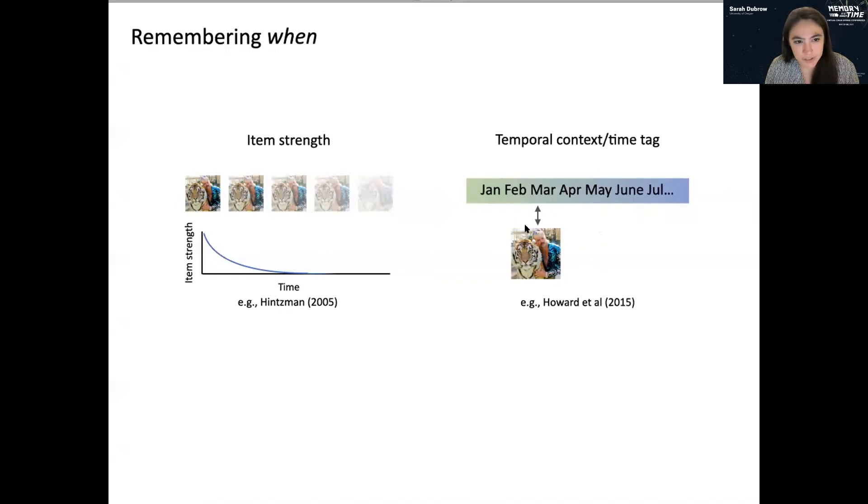And so that might be related to temporal context representation or a time tag or something like that, but the event becomes associated with a particular location in time and that gives you relatively more precise information about when that event occurred. So, you know, for the example of Tiger King, you might remember that it came out in March, or you might remember sort of a more general temporal context, like there was a coincident global catastrophe happening at the time.